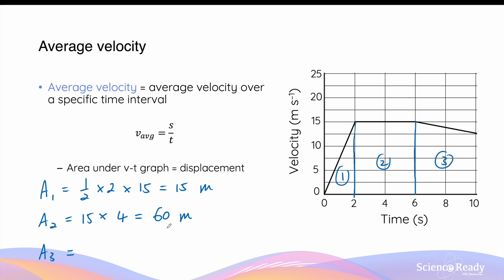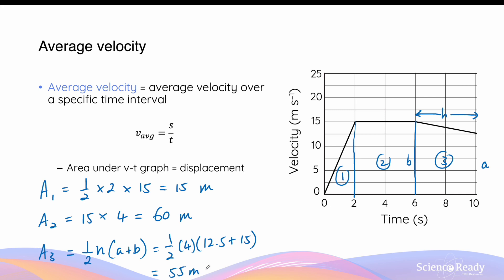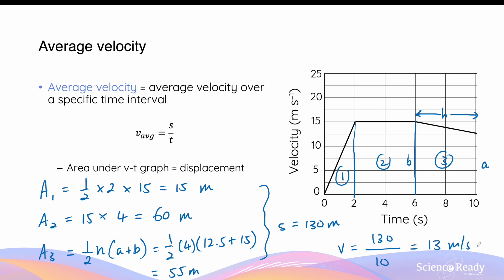The third part is a trapezium, with area = ½ × height × (a + b), where the height is 10 − 6 = 4, a = 12.5, and b = 15, giving a displacement of 55 meters. The total displacement is 15 + 60 + 55 = 130 meters. The average velocity is therefore 130 meters divided by 10 seconds, confirming 13 meters per second.